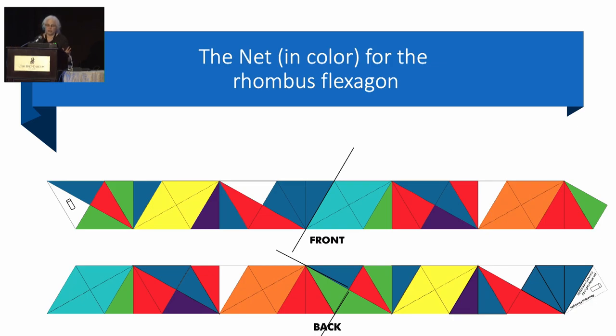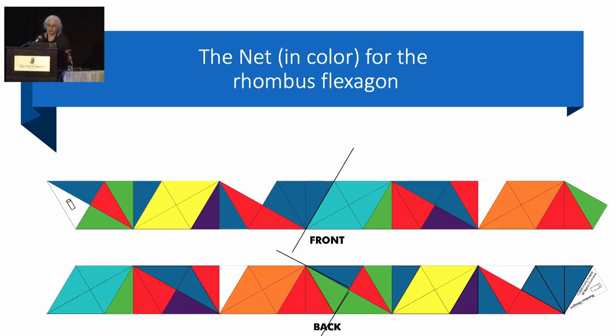For instance, if you look at the front strip to the right of the line, there's a blue rhombus with a bunch of triangles after it. And that same blue rhombus is on the left end of the back of the strip and vice versa. So I found that fascinating.